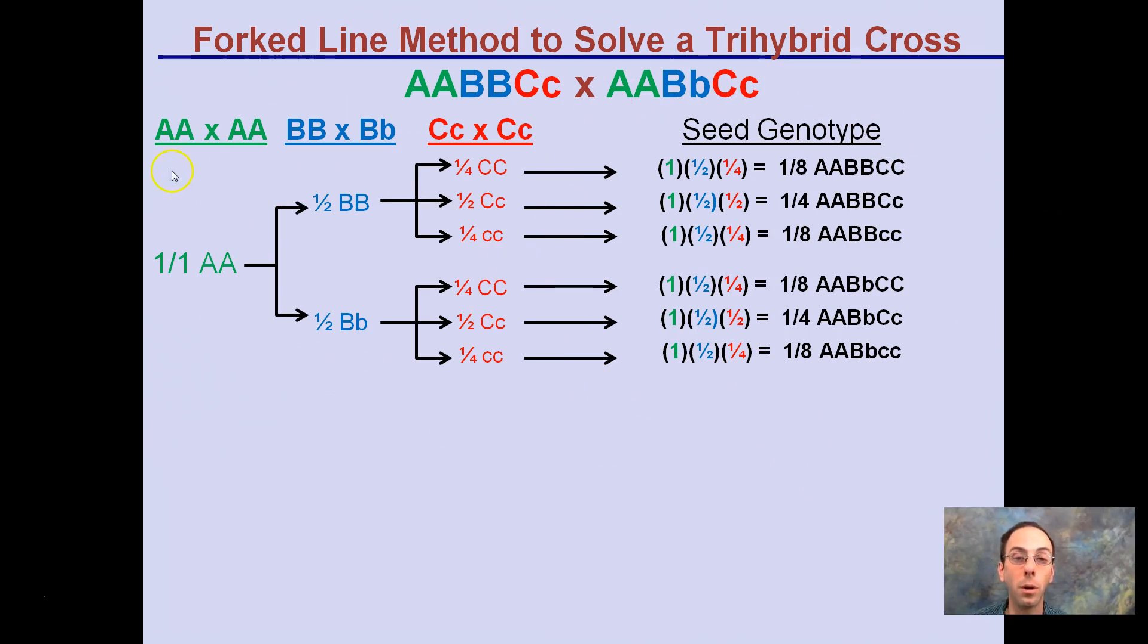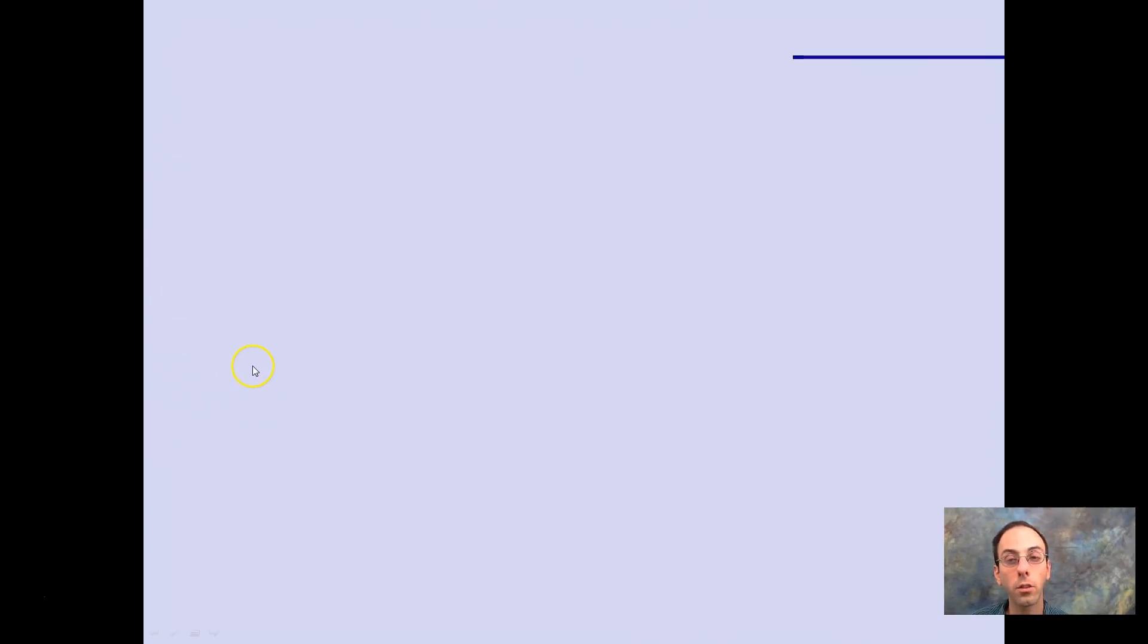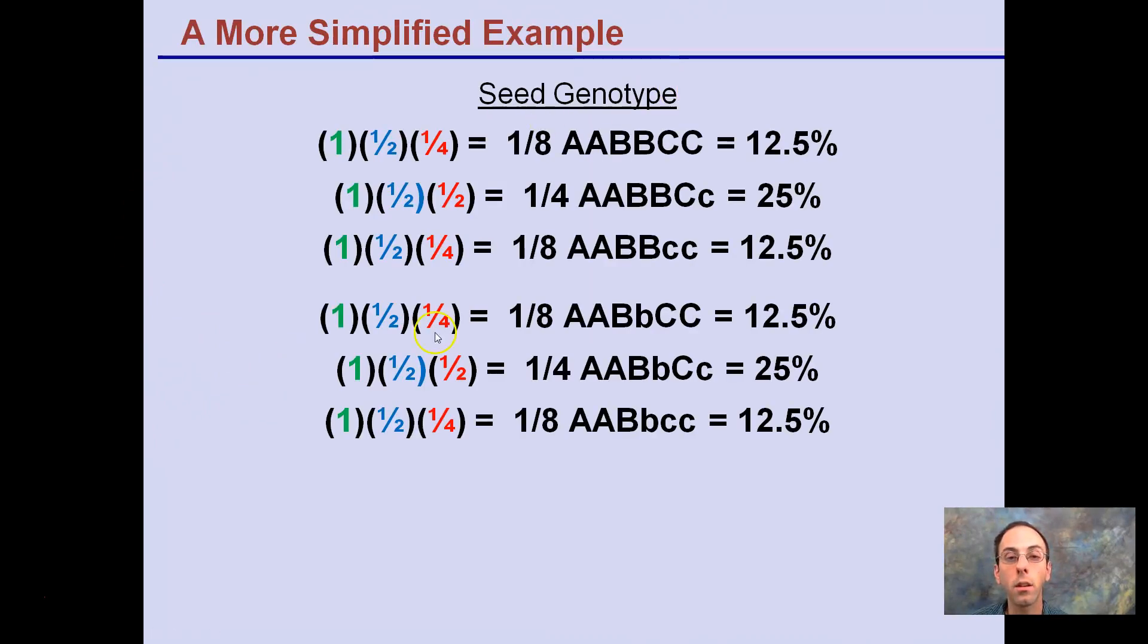And you can see once you get comfortable with this, how quick and easy it can actually be. It's a lot more reliable than a Punnett square. So the simplified version here, we take these fractions and turn them into percents. One divided by eight times a hundred would give you twelve and a half percent, and you do that for the rest here.